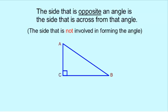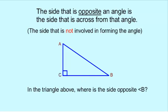For instance, here's angle A. It is made up of side AC and side AB. Therefore, its opposite side would be side CB. What is the side opposite angle B? Angle B is made up of side AB and side CB. So the side opposite angle B would be this side, side AC.